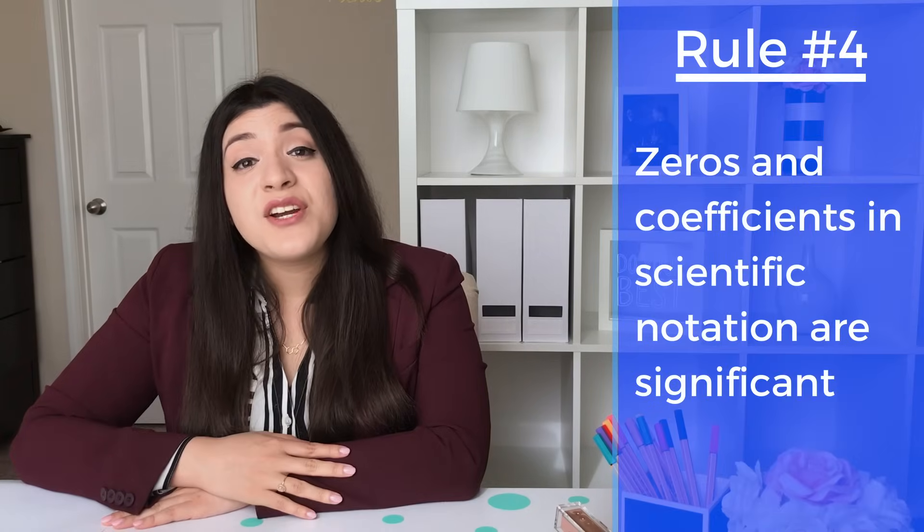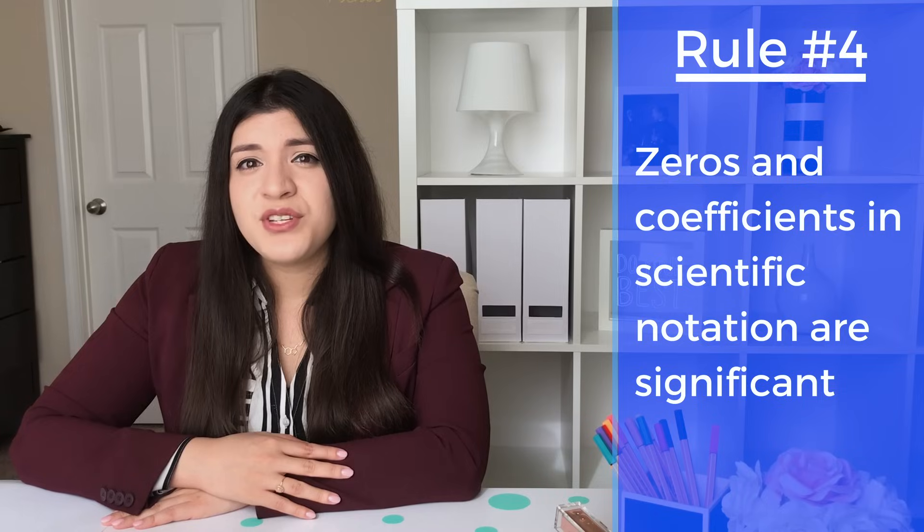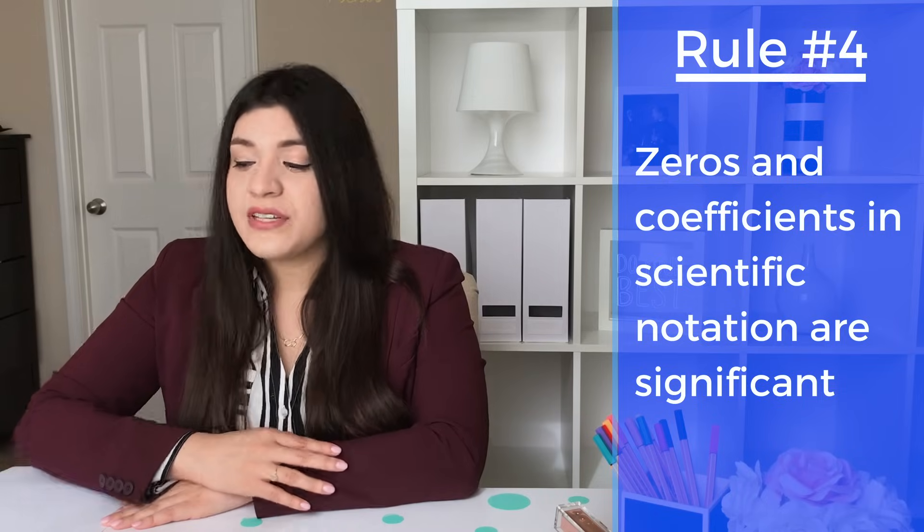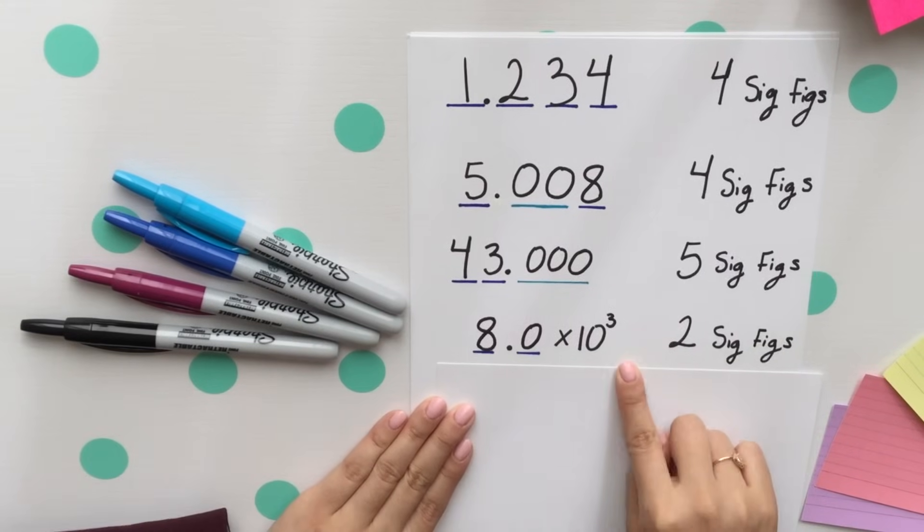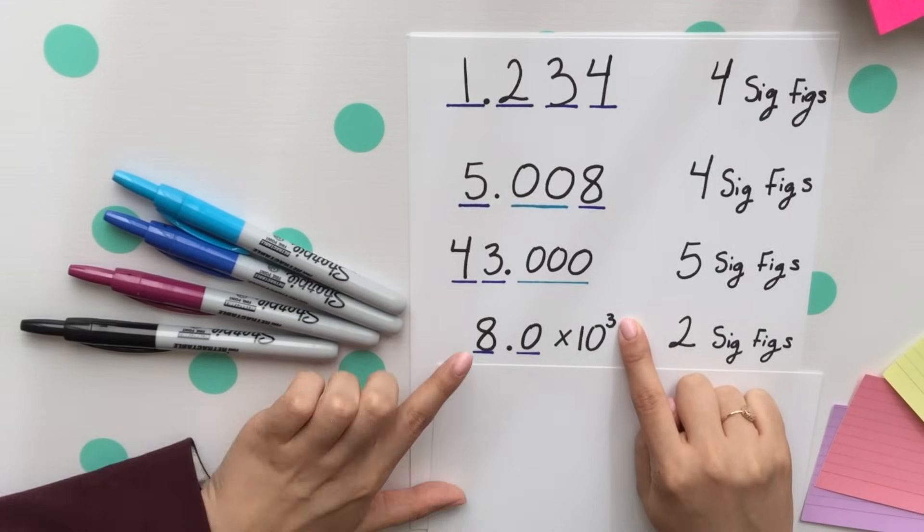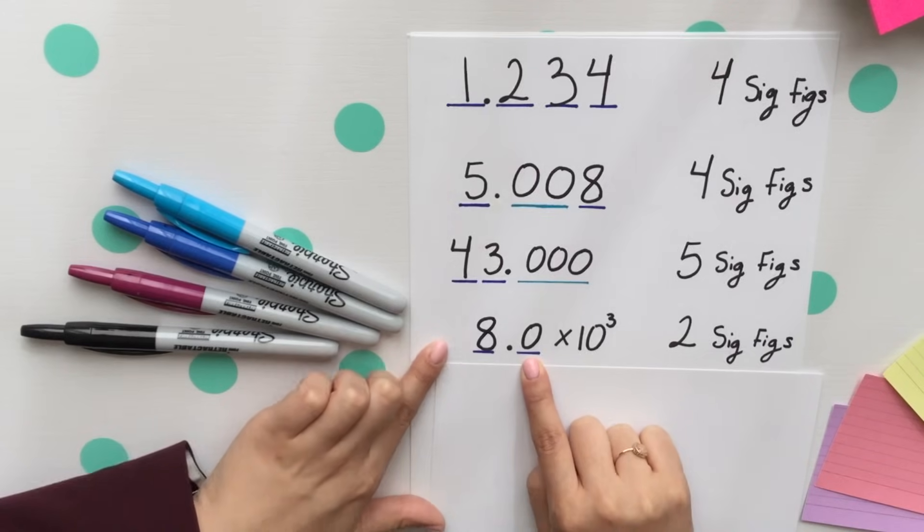Rule number four, any zeros and coefficients in scientific notation are significant. Notice we have our scientific notation with something being multiplied by 10 to some sort of power. This eight and this zero are significant.